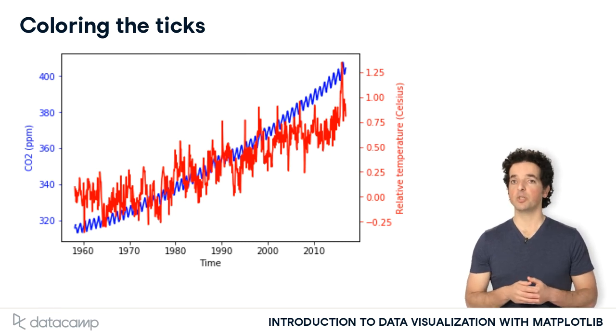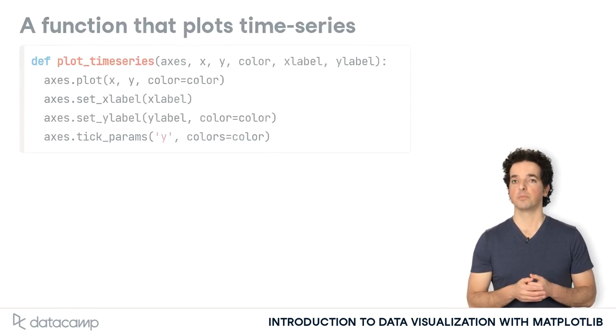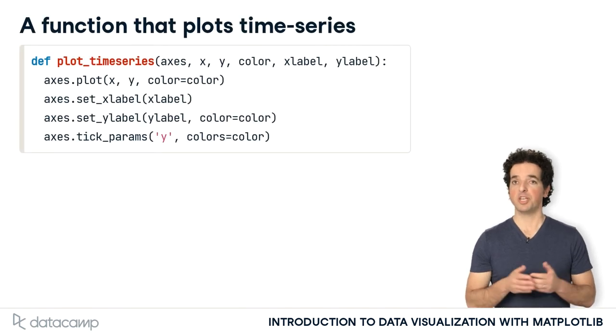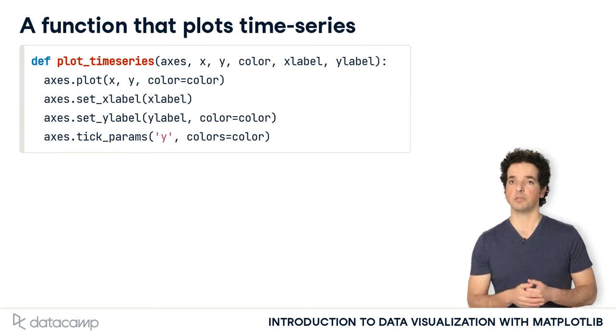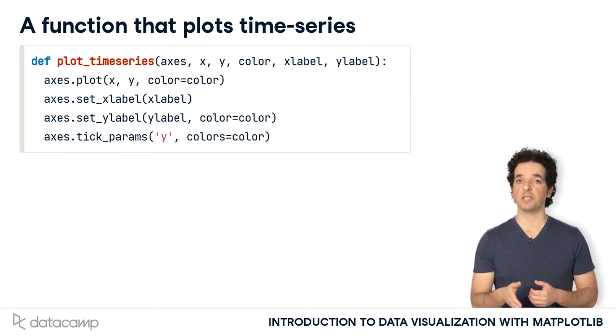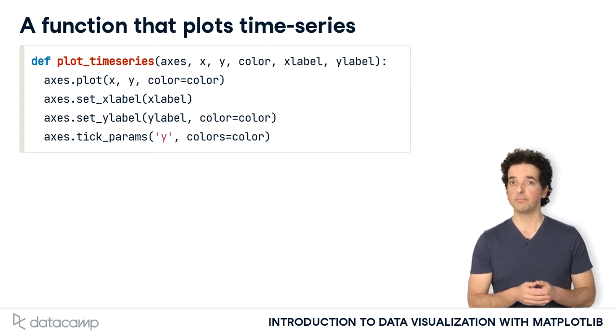This seems like a useful pattern. Before we move on, let's implement this as a function that we can reuse. We use the def keyword to indicate that we are defining a function called plot_timeseries. This function takes as arguments an axis object, x and y variables to plot, a color to associate with this variable, as well as x-axis and y-axis labels.